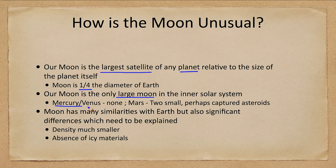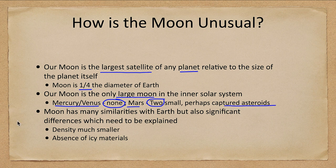Among the other planets, Mercury and Venus have no moons. Mars has two moons, but they're very small — tiny relative to Mars's size — and they're probably objects that were captured from the asteroid belt.